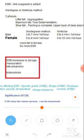For males using Wintrobe, the reference range is 0 to 6 mm per hour; for females it is 0 to 15 mm per hour. The fall is more in females, so ESR will be higher in females.